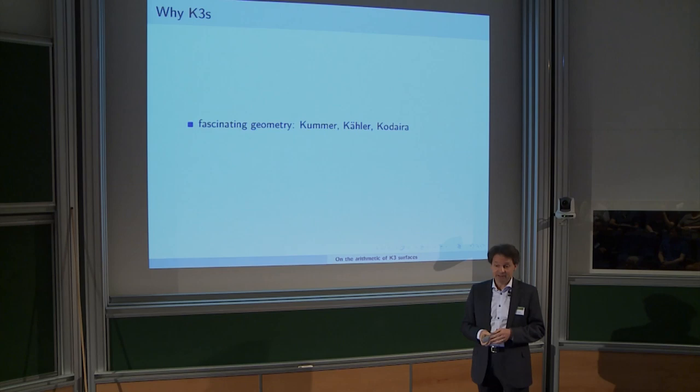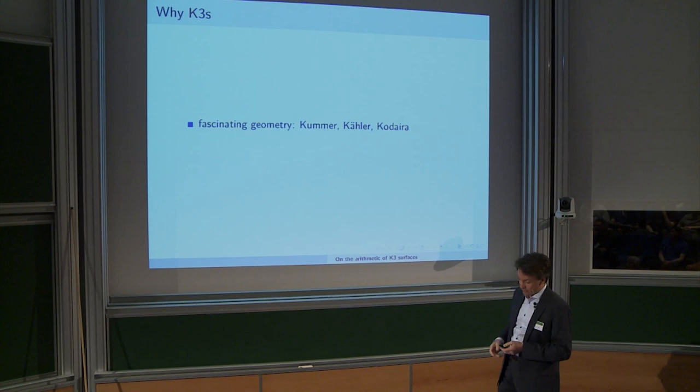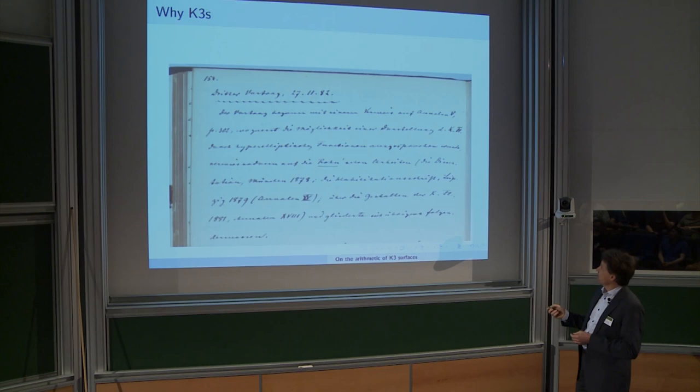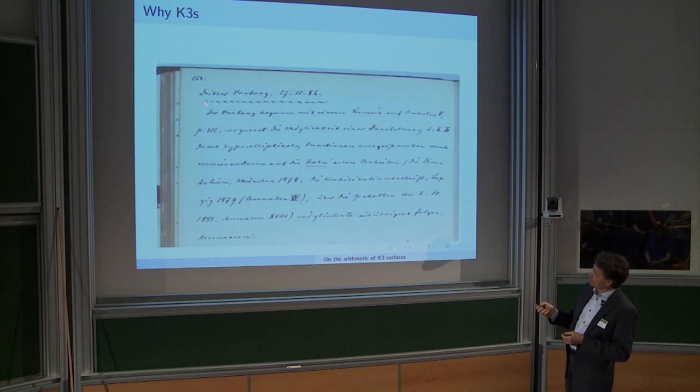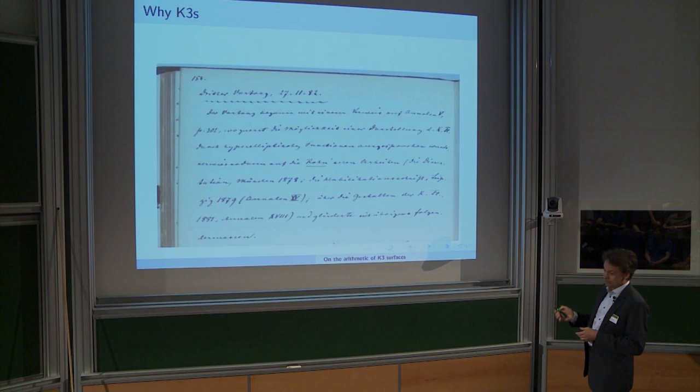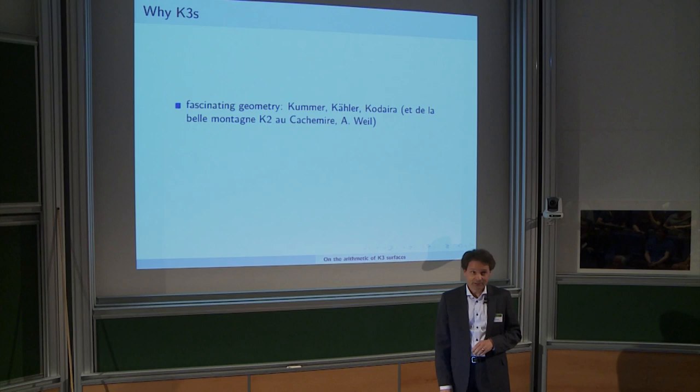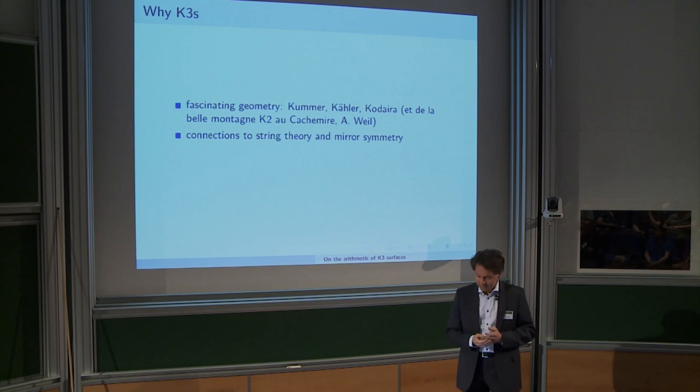Why are we thinking about K3s? First of all, there is fascinating geometry. Usually one talks about Kummer, Kähler, and Kodaira — people wonder why K3. I have an explanation from 1882: Klein's own handwriting shows 'K dot,' which I interpret as a three. There is also a reference to André Weil, supposedly about some mountains, but I don't believe that. There are also interesting connections to string theory, mirror symmetry, and mathematical physics. Perhaps our universe has something to do with K3s.